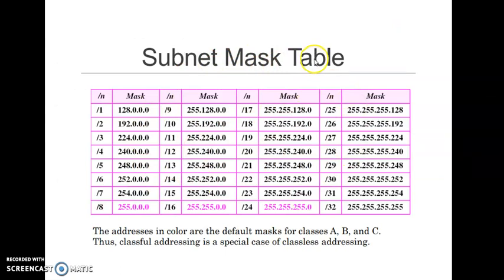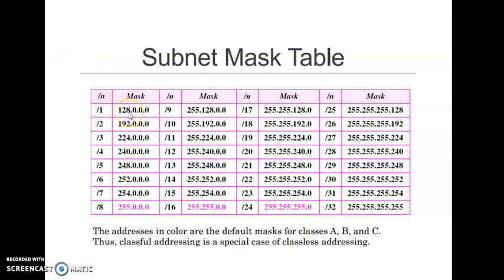This subnet mask table shows the slash notation values. Slash 8, slash 16, and slash 24 correspond to the subnet masks for Class A, Class B, and Class C respectively. CIDR uses slash notation to indicate how many bits are assigned to the network ID. Slash 1 means only one bit is assigned for the network ID and the remaining 31 bits are for the host ID. This continues all the way up to slash 32.